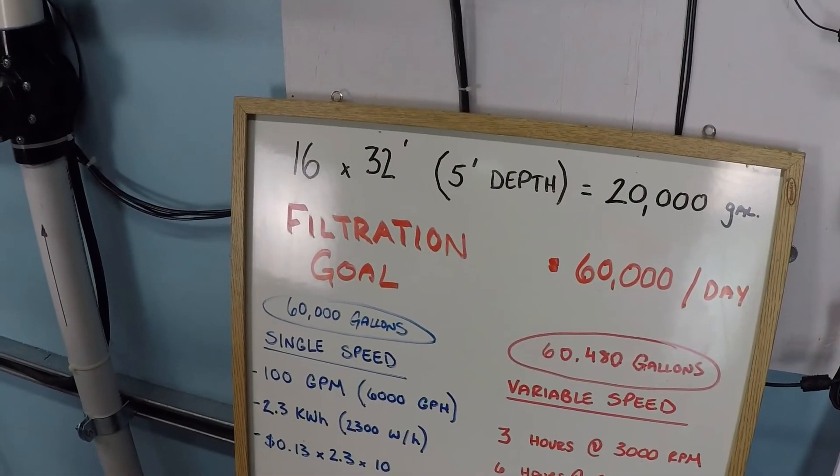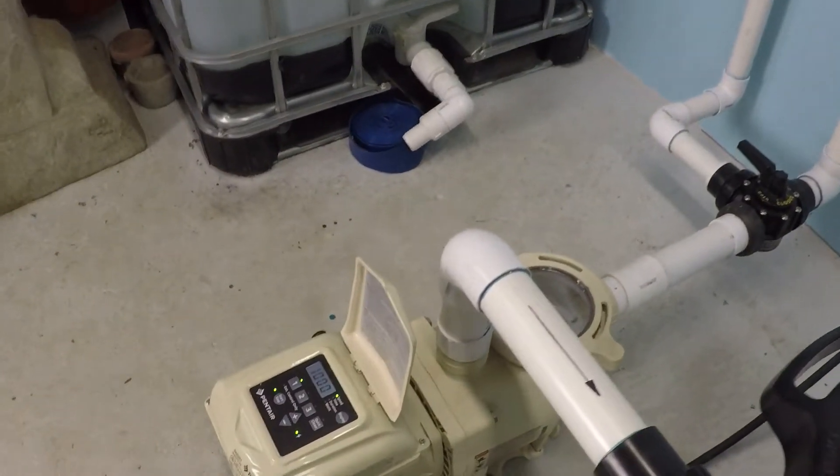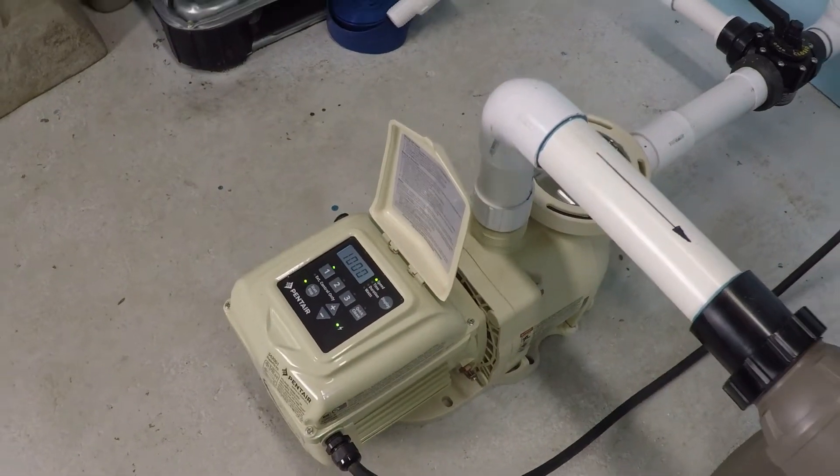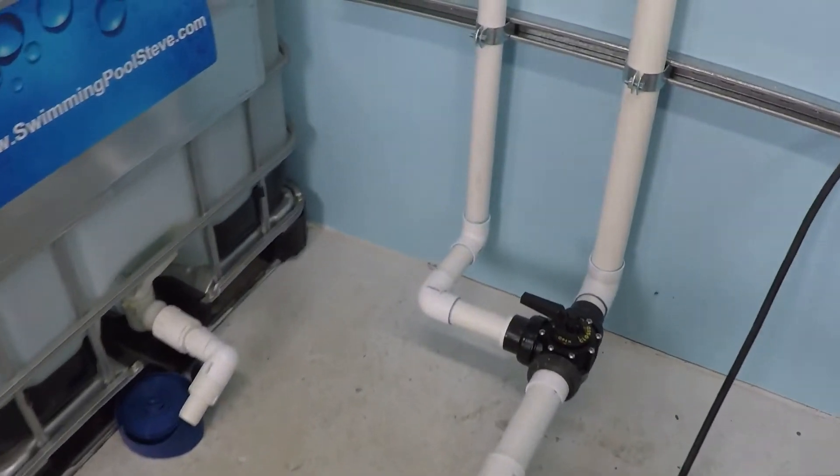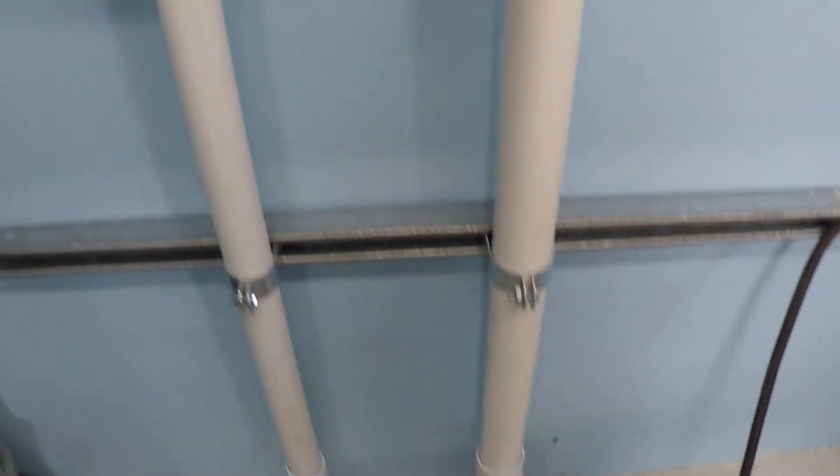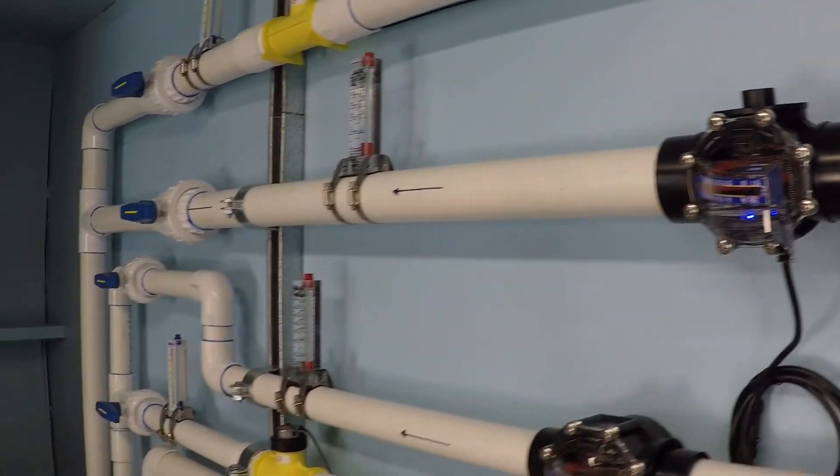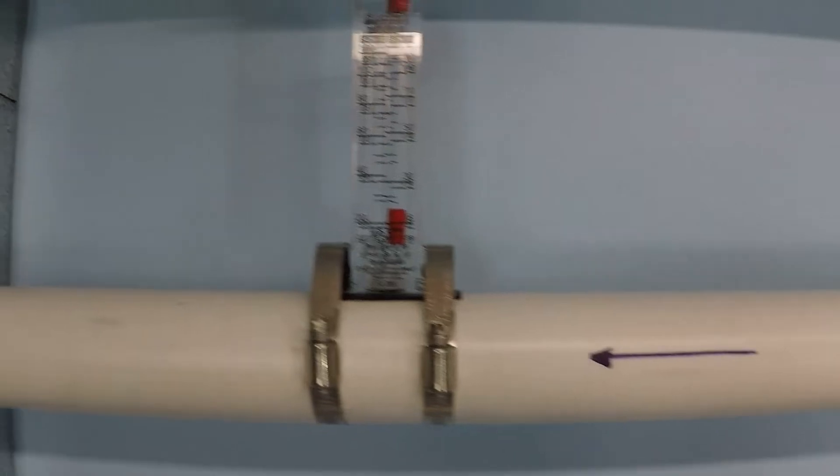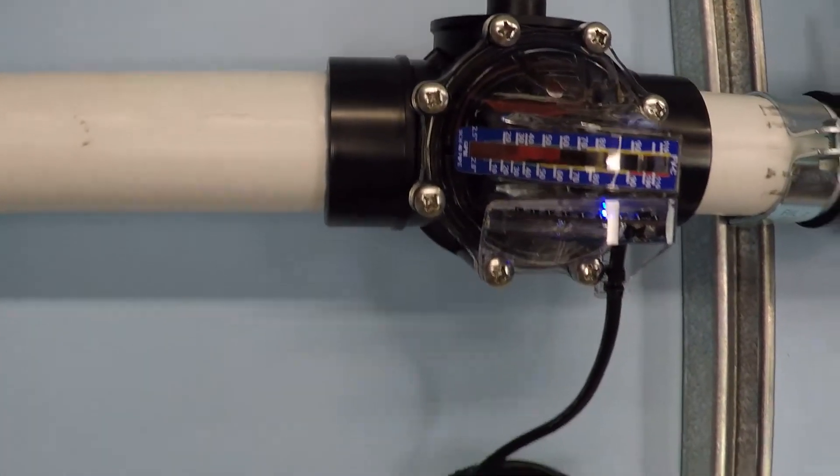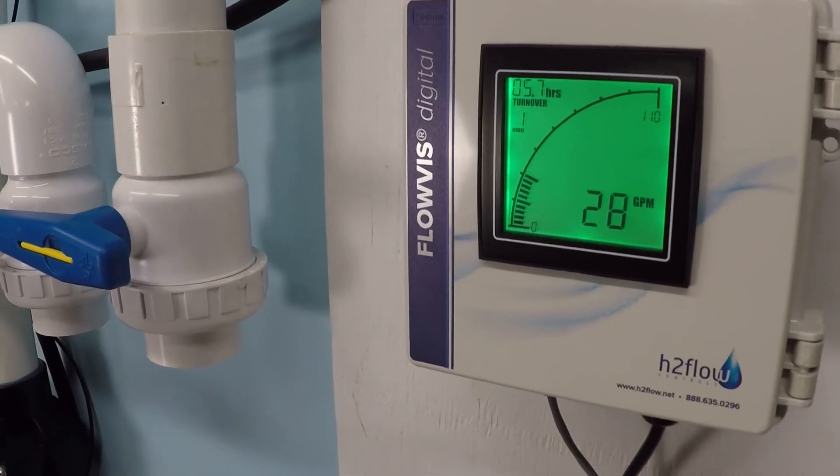So let's take a look at how we would go about filtering that. Now first of all, we're going to be testing this with a one and a half horsepower Pentair variable speed pump. We have a Hayward 150 square foot cartridge filter. We have a two inch suction line as well as a two inch return line, and we'll be monitoring the flow through a series of flow meters. These are analog flow meters. This one has been adapted with a digital upgrade and we'll be taking our measurement readings from this digital flow meter.